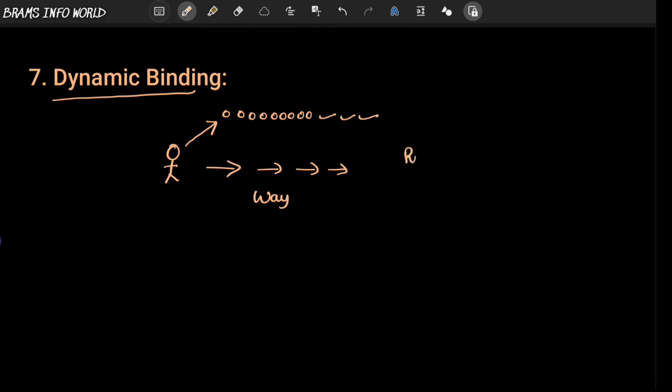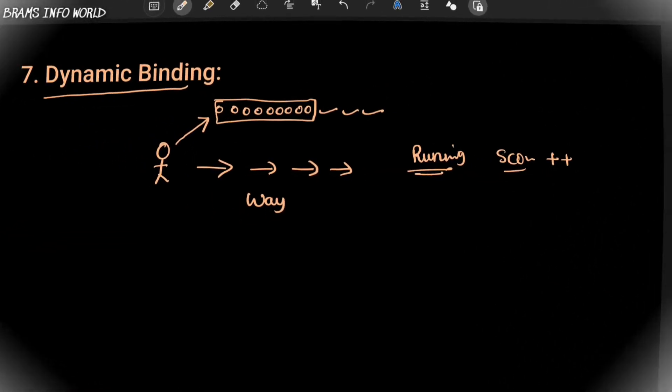So during this time you are running, the particular object is running as well, and your score is going to increase while collecting the coins. So this is nothing but dynamic binding or dynamic method.